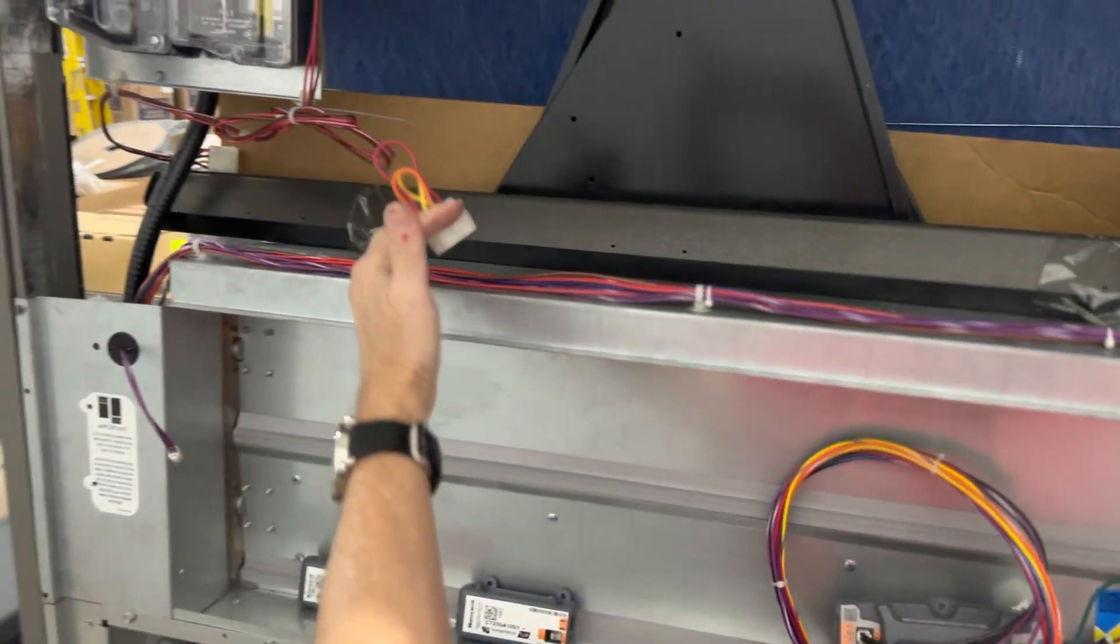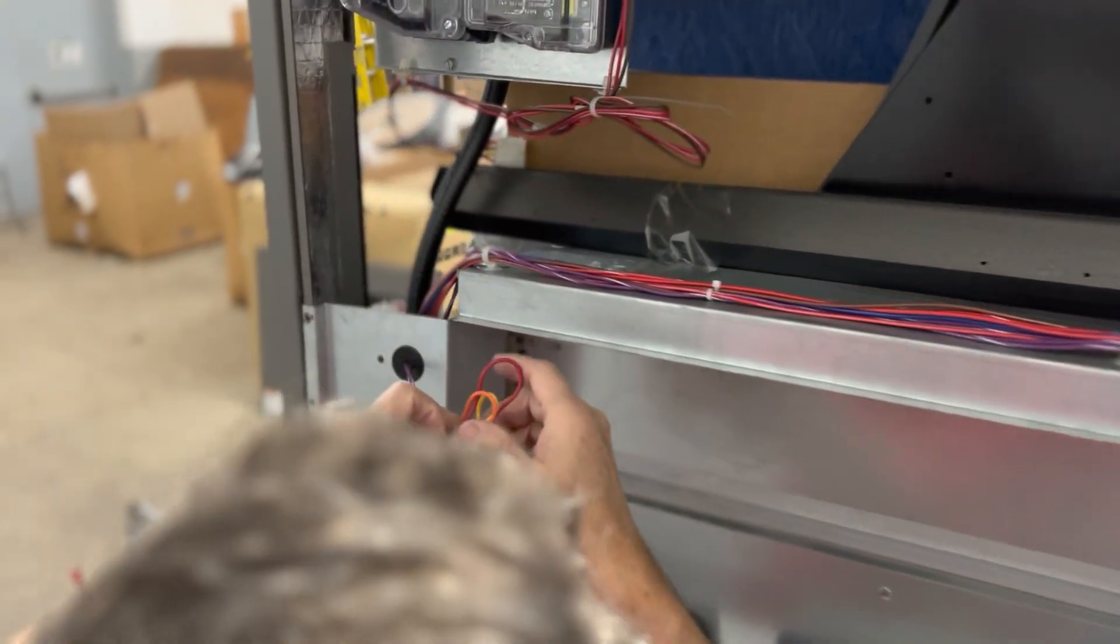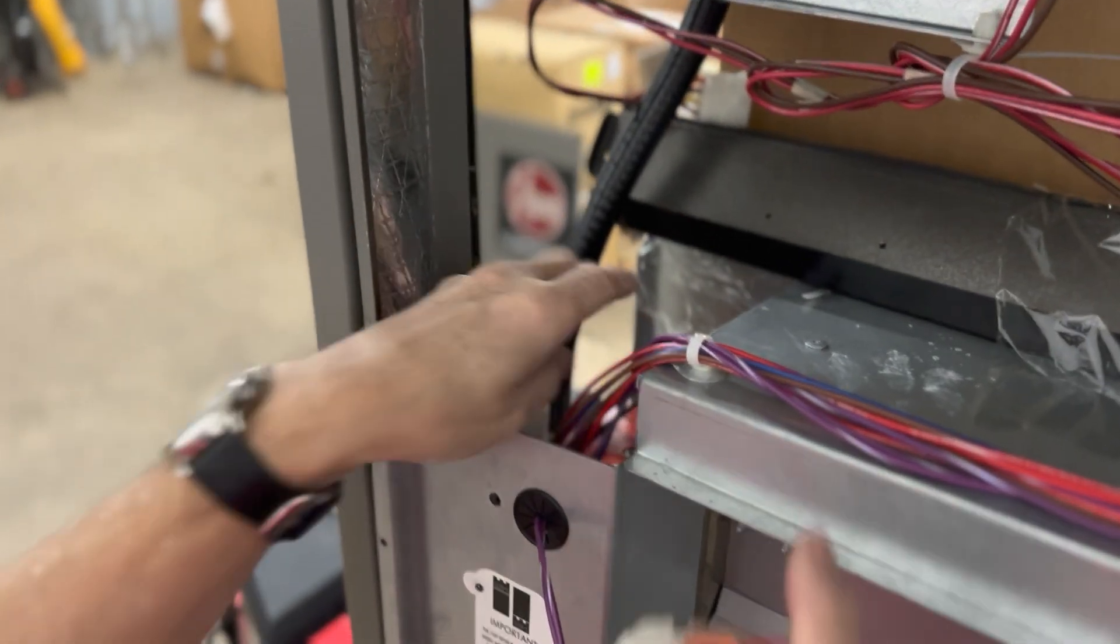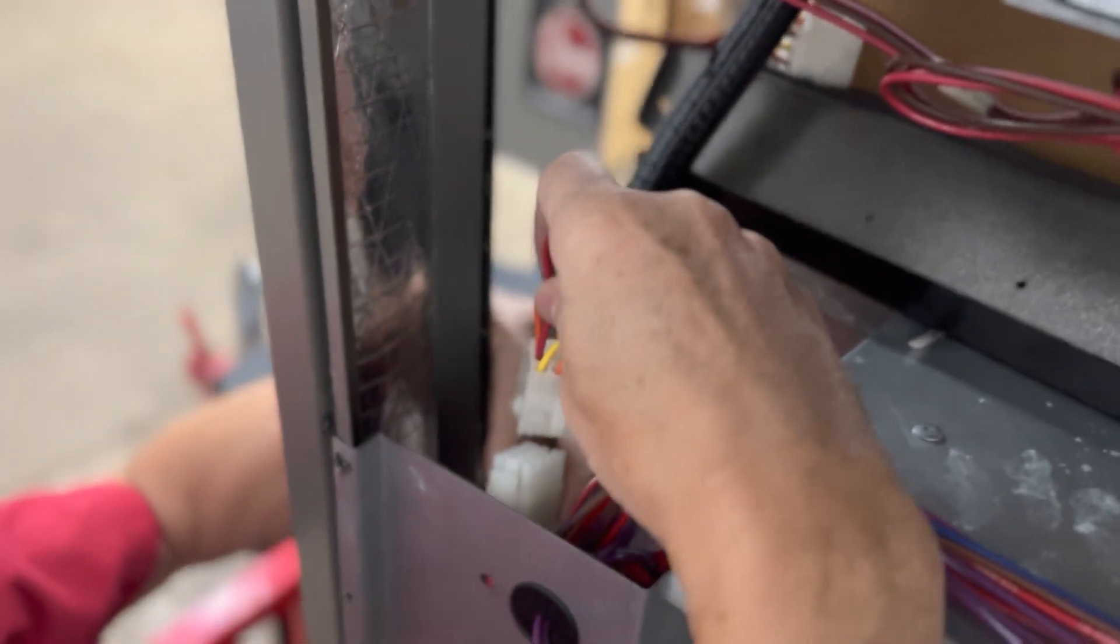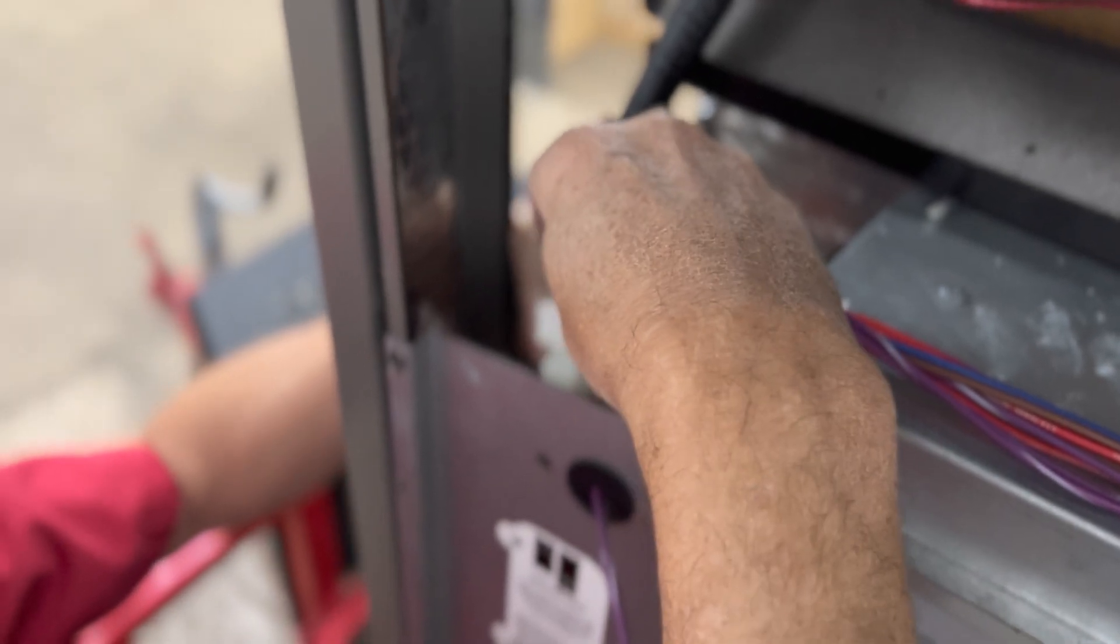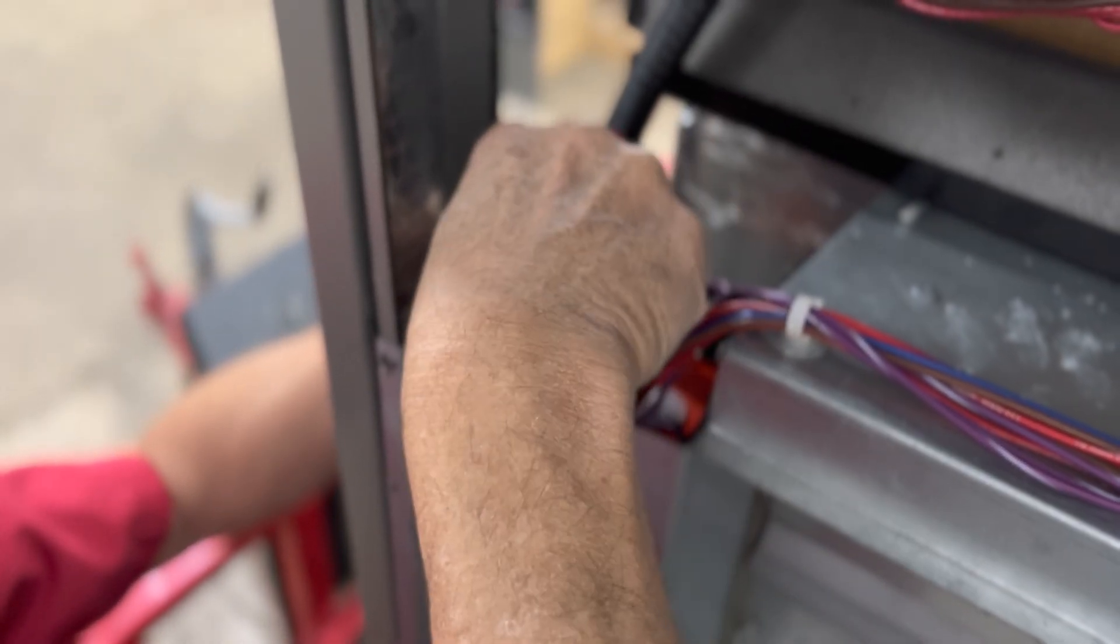Our jumper plug that we removed in the first step is going to go over here. There will be an empty plug right here. It's a little difficult to see, but it's next to the economizer actuator. And this is where the jumper plug belongs when you're all done.